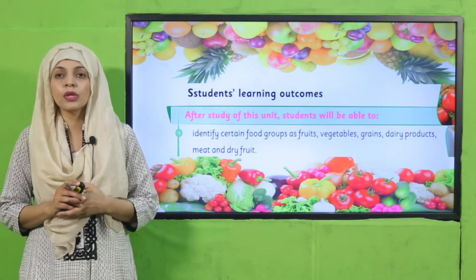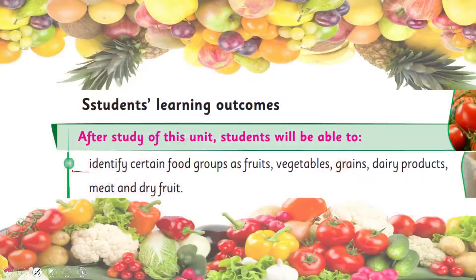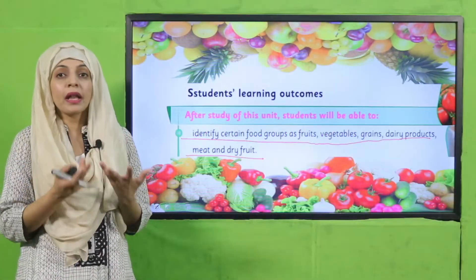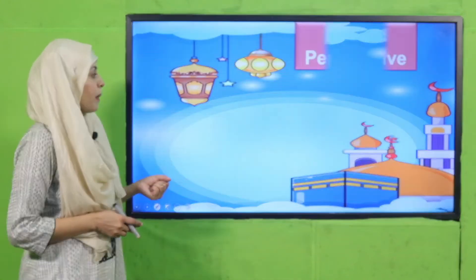My dear students, here is the student learning outcome for today. Today the students will be able to identify certain food groups as fruits, vegetables, grain, dairy products, meat, and dry food. As you know, human beings can eat both meat and plants, and different food groups provide different types of energy. We will have a look at that.